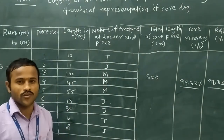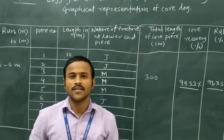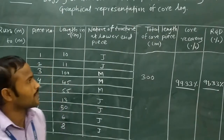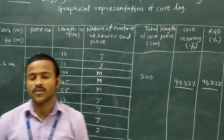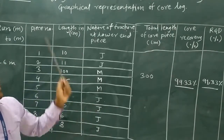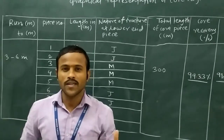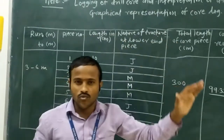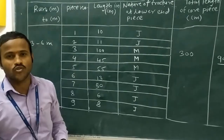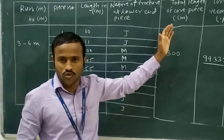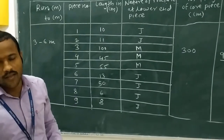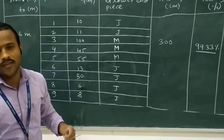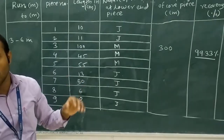Today we will discuss one of the most important experiments from Engineering Geology — the logging of drill cores and interpretation of drilling data, with the graphical representation of core logs. The importance of drilling is to ensure the safety and stability of major civil engineering structures such as dams, bridges, or tunnels. For that purpose, we have to analyze the quality of the rock, which is why we need to understand rock quality designation, or core log.